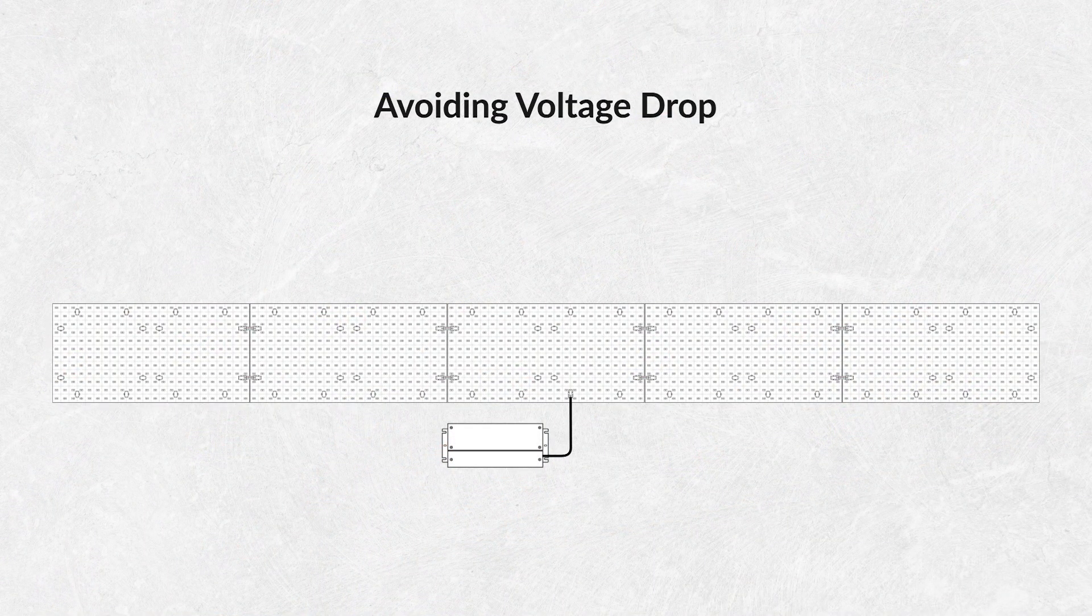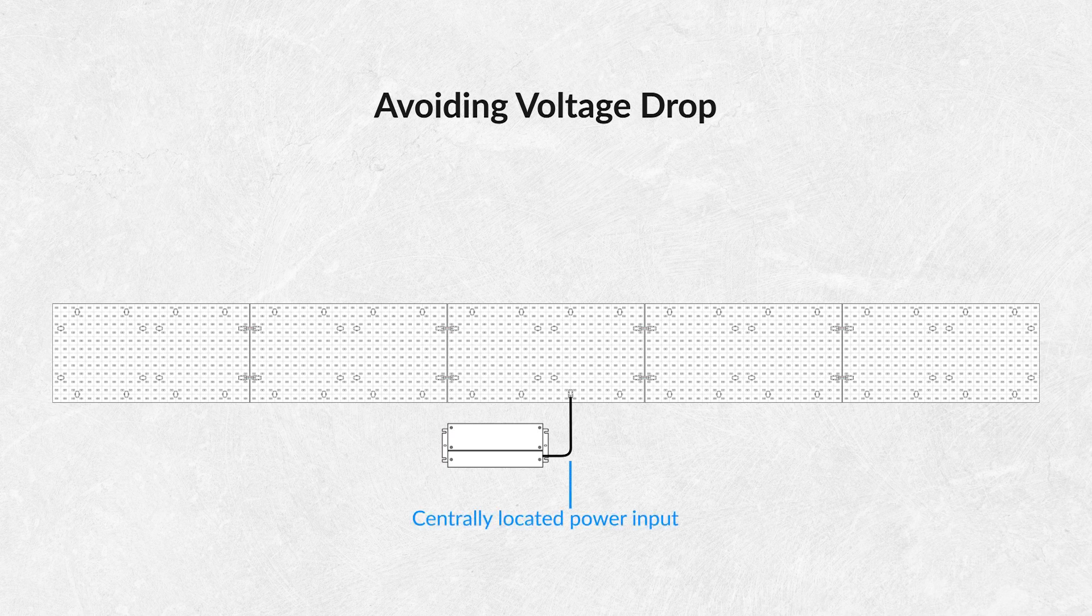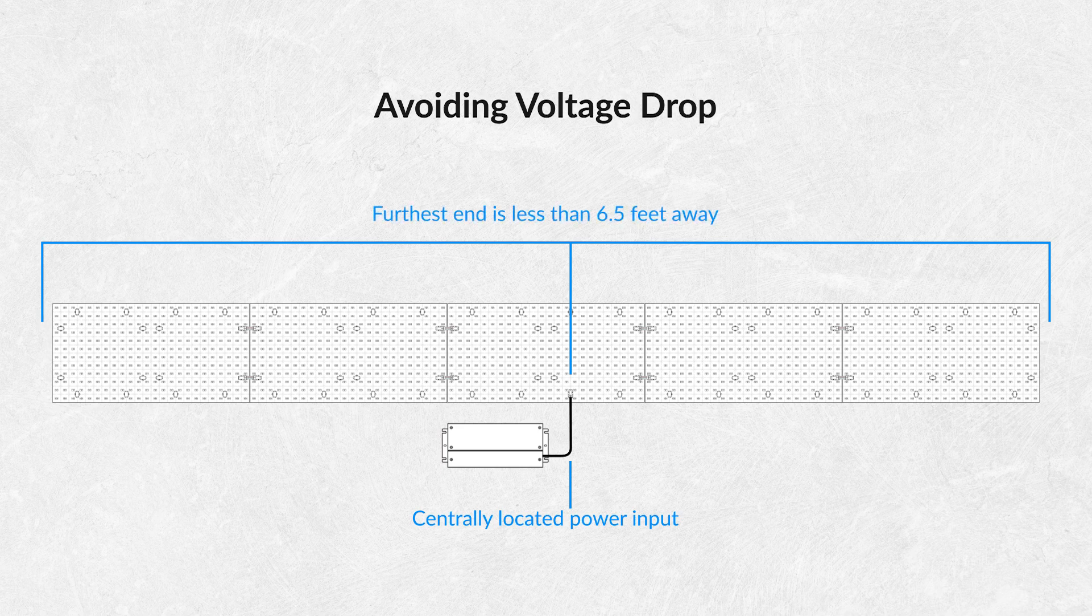To avoid voltage drop, we recommend that you centrally locate the power input connection so that the furthest part of any lightsheet is less than 6.5 feet away.